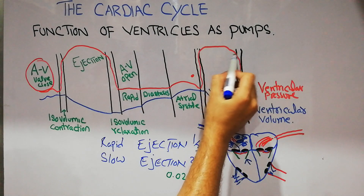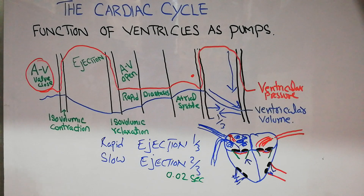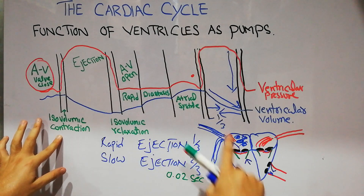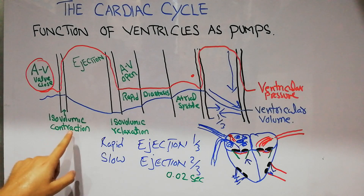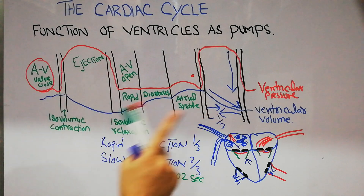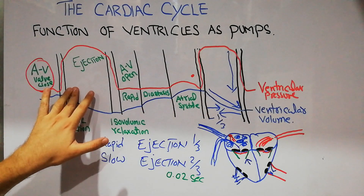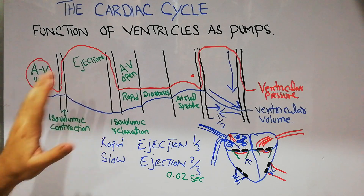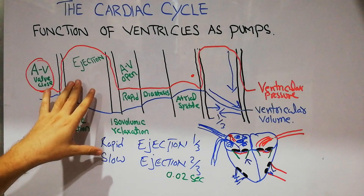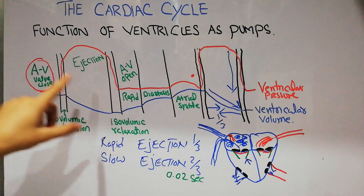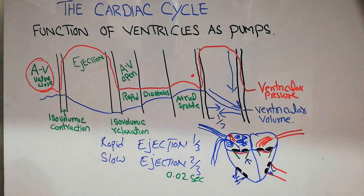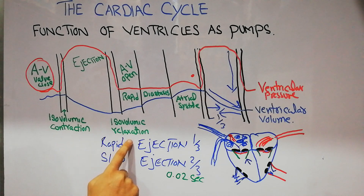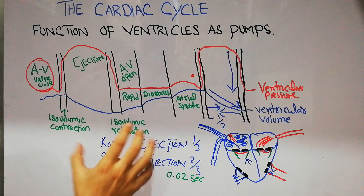Initially, the pressure in the ventricle was increasing with no blood going out — that was isovolumic contraction. Then the ejection phase started: rapid ejection in the first one-third, then slow ejection in the remaining two-thirds. When the slow ejection completed, the pressure in the ventricular walls started decreasing while the amount of blood remained the same — that is isovolumic relaxation.